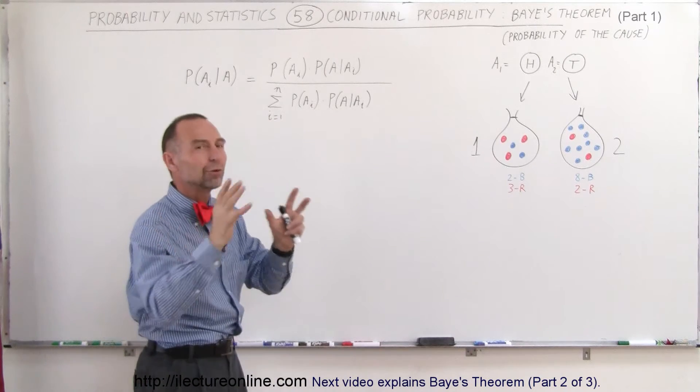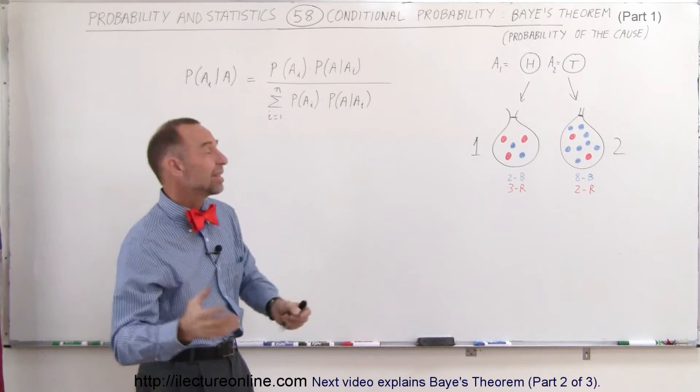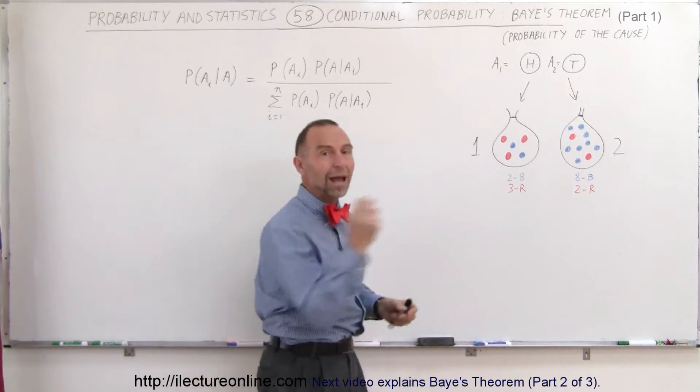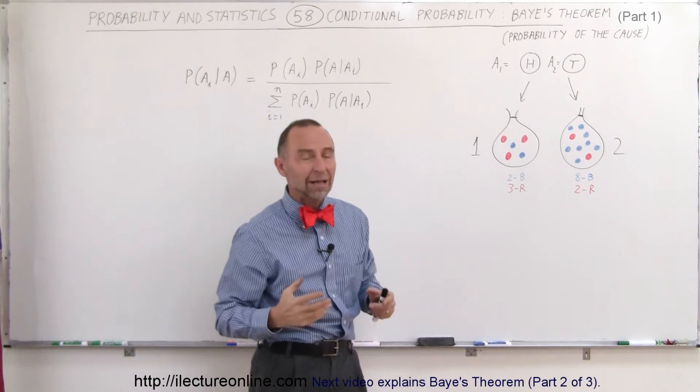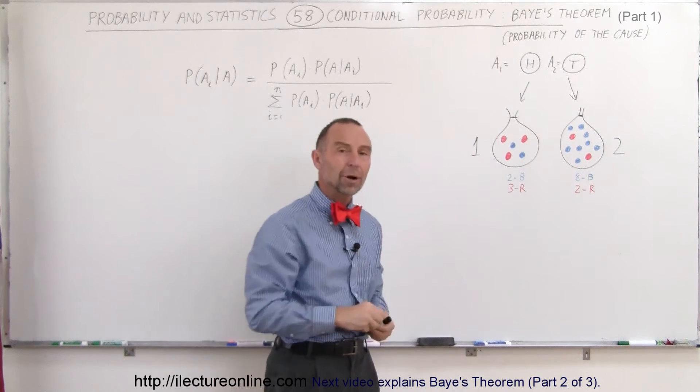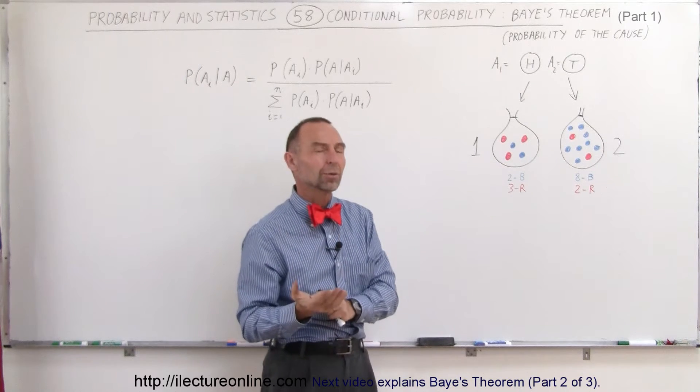Now, Bayes' theorem puts things kind of in reverse. Let's, for example, say that you go in and you grab from any one of the two bags, one or two, you grab a marble, and you look at it, and you see that it's a red marble.